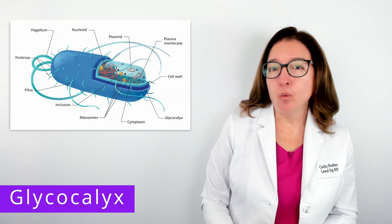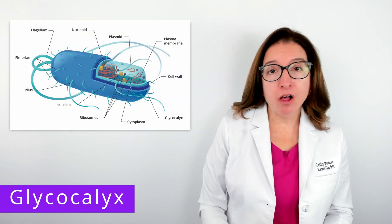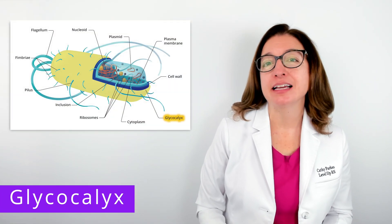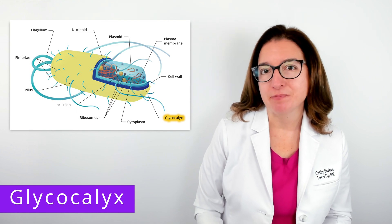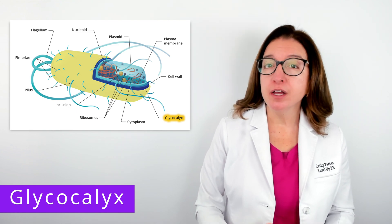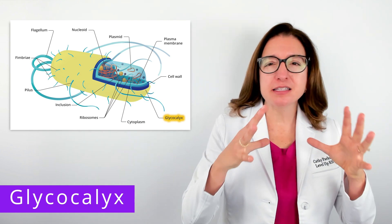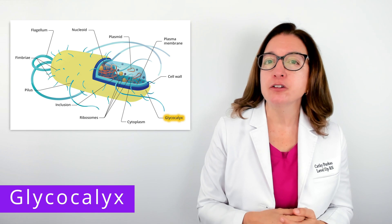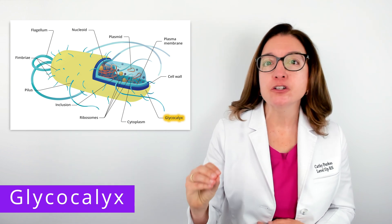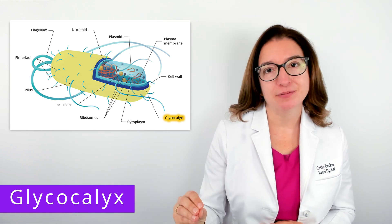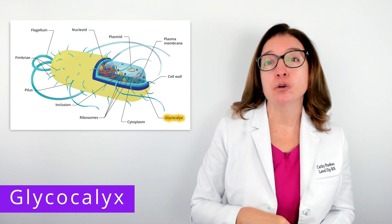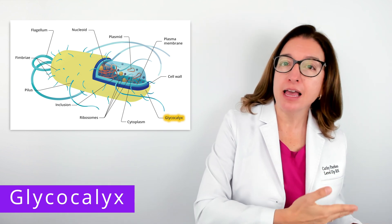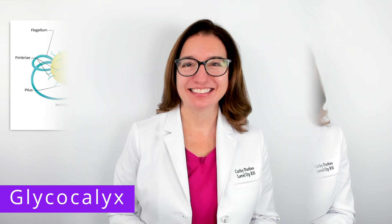Outside the cell wall, some but not all prokaryotic cells have a glycocalyx. This is a sugar coat that surrounds the exterior of the cell and allows the cell to adhere to surfaces. The two main types of glycocalyxes include a capsule and a slime layer.